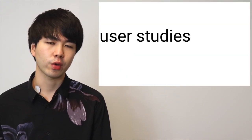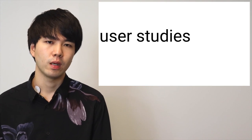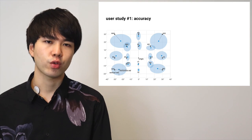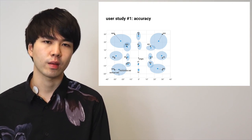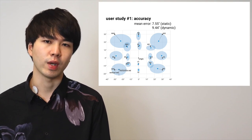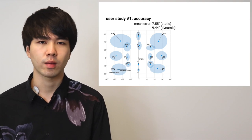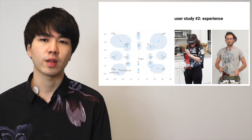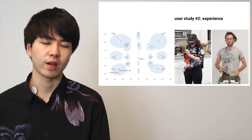We evaluated electrical head actuation in two studies. In the first study, we validated the control accuracy: we actuated the participant's head orientation to acquire different targets. We found that our system has an accuracy of around 8 degrees for static targets and around 9 degrees for moving targets. In our second study, we explored participants' experiences across our four applications.